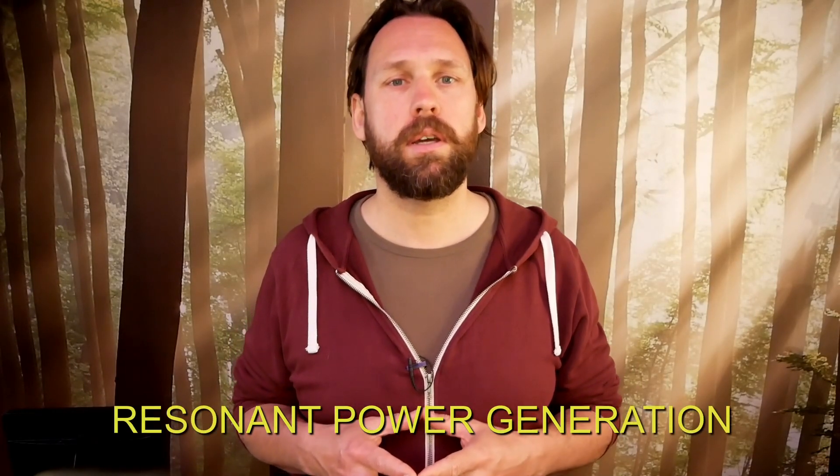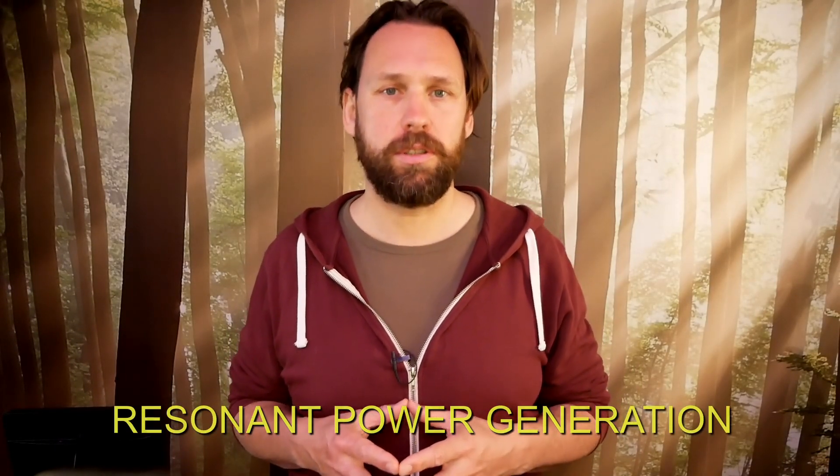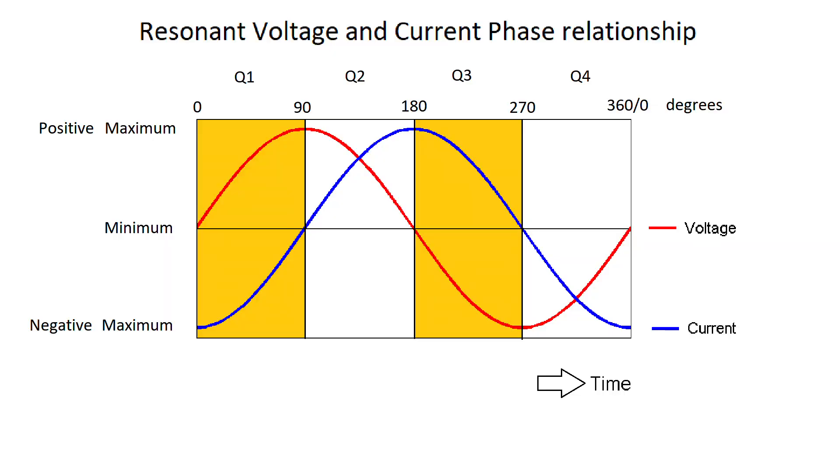External power is flowing into the resonant system. Now we will take a look at the power generation. In Q1 and Q3 the voltage and the current are opposite polarity. So the current and the voltage are generating power. This means the resonant coil in Q1 and Q3 acts as a generator of electric power.